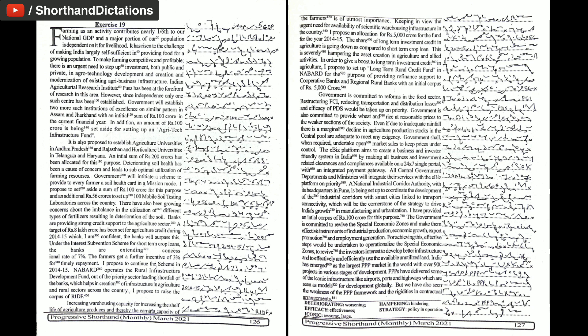India has emerged as the largest PPP market in the world with over 900 projects in various stages of development. PPPs have delivered some of the iconic infrastructure like airports, ports and highways which are seen as models for development globally. But we have also seen the weakness of the PPP framework and the rigidities in contractual arrangements.